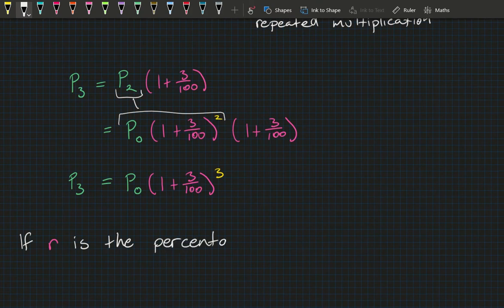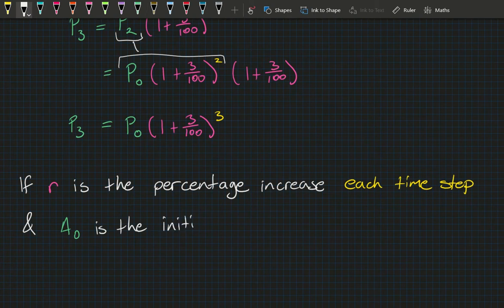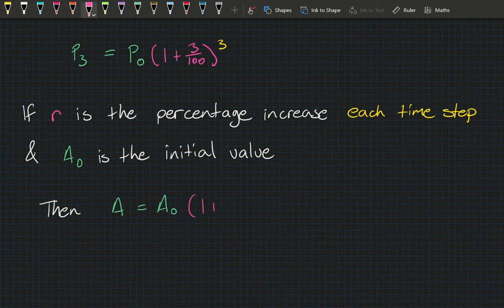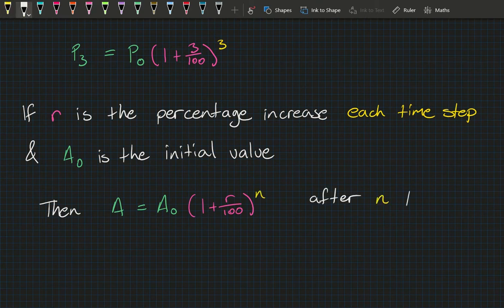From this pattern, if r is the percentage increase per time step and A₀ is the initial value, then after n time steps the amount is: A = A₀ × (1 + r/100)^n. That is the formula we're going to use today.